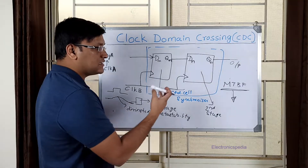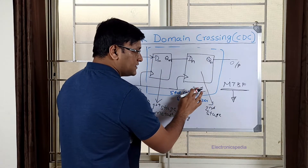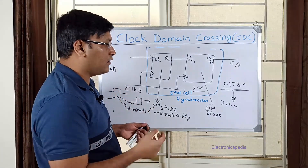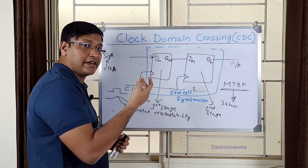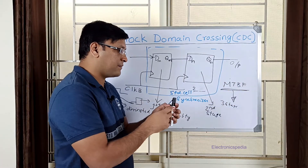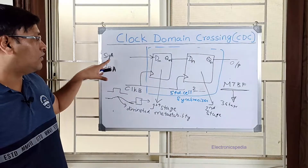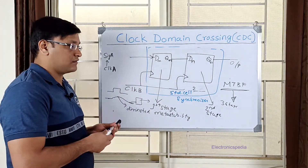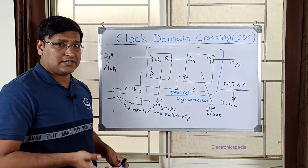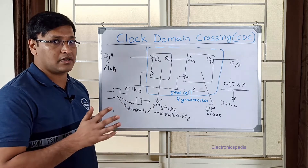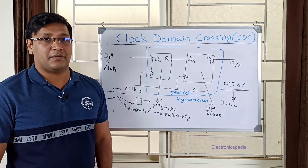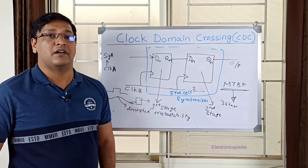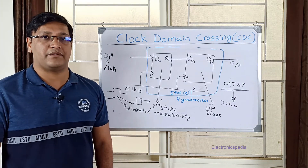You may have a two-stage, three-stage, or four-stage synchronizer — this is purely dependent on the frequency of the capture domain and the data rate of change, as determined by the MTBF calculation. With this technique you will be able to transfer a level signal from one clock domain to another, provided the signal remains constant — it's a level signal. In my next video I'll explain how to transfer a pulse from one clock domain to another, and also how to capture a signal from a faster clock domain to a slower clock domain and vice versa. Please watch my next video, thank you.